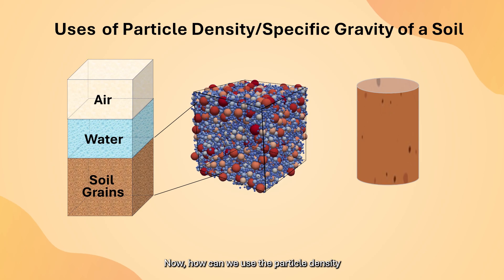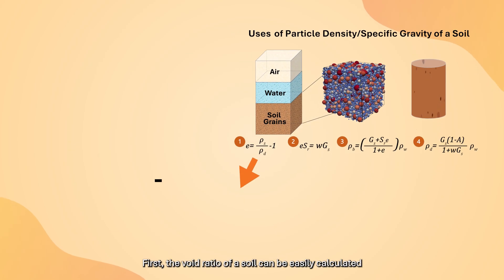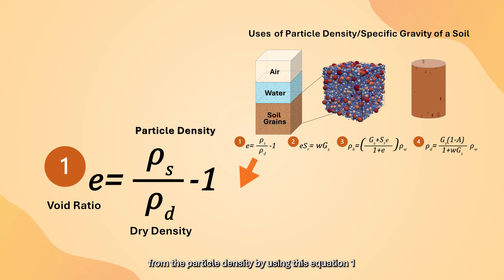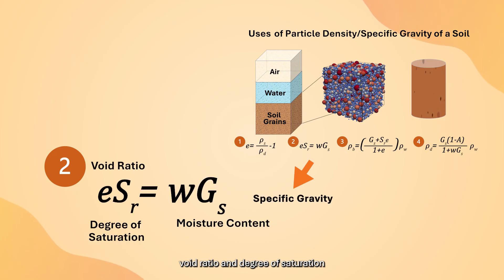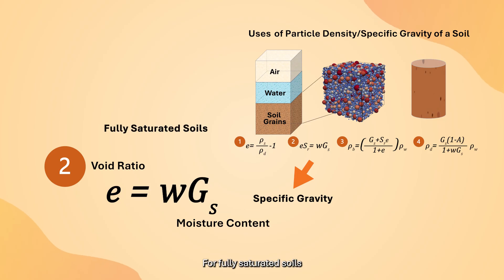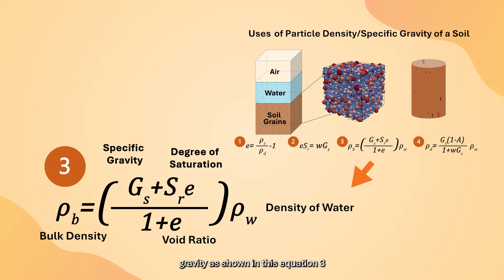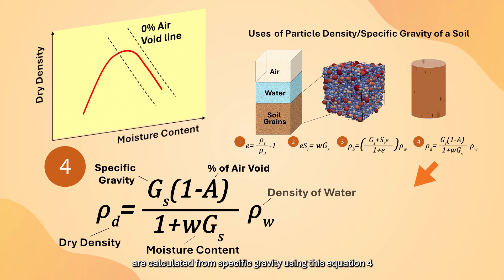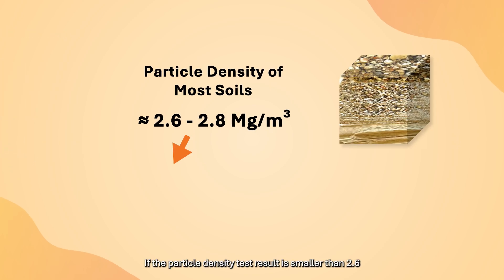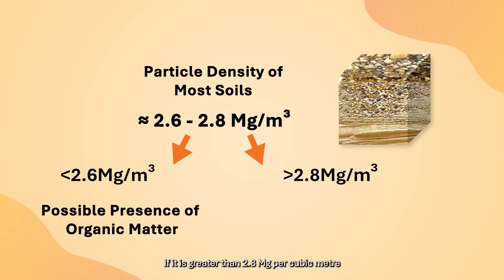The particle density or specific gravity value has several applications. The void ratio of a soil can be calculated from particle density using Equation 1. Equation 2 connects specific gravity with moisture content, void ratio, and degree of saturation. For fully saturated soils, moisture content is directly proportional to void ratio. Bulk density can be expressed in terms of basic soil parameters including specific gravity, as shown in Equation 3. The air void lines in the Proctor compaction curve are calculated from specific gravity using Equation 4. If the particle density is smaller than 2.6, this may indicate organic matter; if greater than 2.8 Mg/m³, it may indicate heavy minerals such as hornblende and iron oxides.